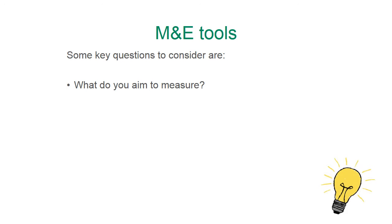The formulation of indicators must be SMART — something you may have heard in previous training in the Learning to Live Together program — meaning they need to be specific, measurable, achievable, relevant, and time-bounded. In the case of the LTLT program, the objectives you set for your program in the design stage are the starting point to answer this first question.